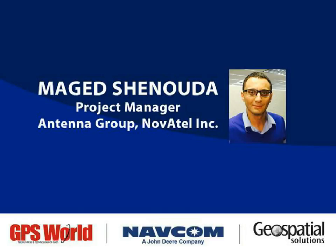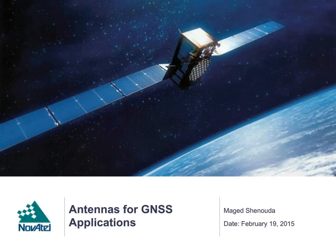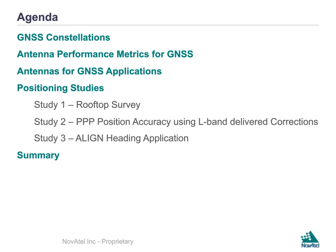Thank you, Alan. Today I'm going to be discussing antennas for GNSS applications. My agenda is as follows: an overview of existing GNSS constellations, a discussion of antenna performance metrics that Novotel looks at when evaluating an antenna for GNSS, examples of antennas for GNSS applications, and then some positioning studies — a rooftop survey, a precise point positioning accuracy study using L-band delivered corrections, and an align heading application. Then we'll summarize the findings.